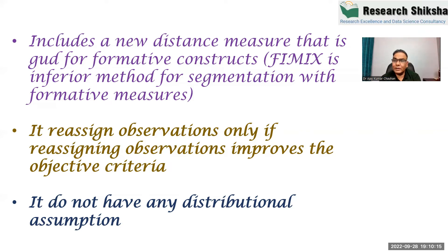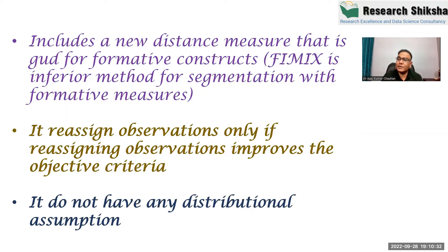POS applies an algorithm in which each observation is included in the model and the R square is calculated. If R square increases, we keep the observation in the model. If R square decreases, we remove the observation, and that observation will be kept in another segment. So it is a kind of iterative algorithm.